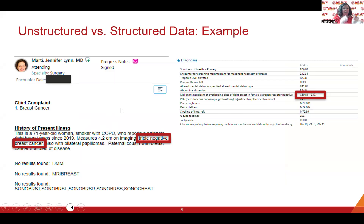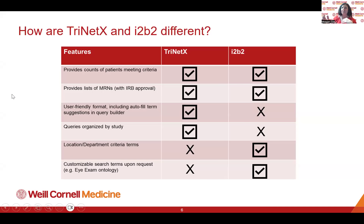As an example, searching for particular terms in unstructured text requires very different processes compared to pulling a structured list of diagnoses. TrinetX and I2B2 overlap a lot in what they're able to do — both search EPIC for structured data to find people meeting your inclusion-exclusion criteria, and both can give you counts of patients without any PHI and without IRB approval. With IRB approval, you can also request MRNs from either system.